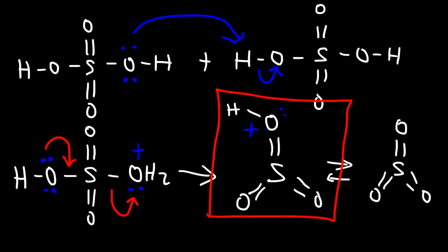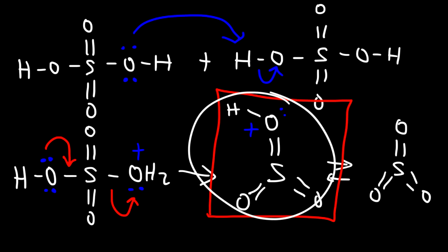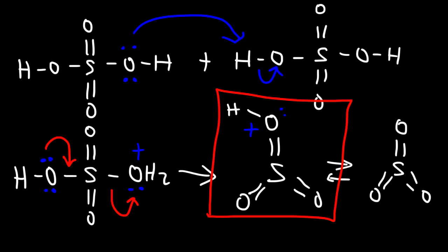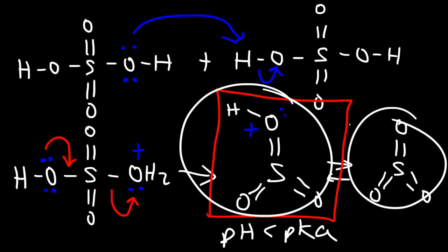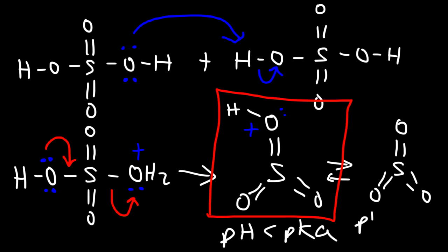Which species you use really depends on the pH. This is a strong acid, so to use the protonated form the solution must be very, very acidic. Whatever the pKa of this species is, if the pH of the solution is less than the pKa, then the protonated form will exist in greater concentration. However, if the pH is greater than the pKa, then the deprotonated form will exist in greater concentration. So if you want to be specific, you need to compare the pH of the solution to the pKa of this acid, then decide which species is most likely to react with the benzene ring. For this example, I'm going to use the protonated form.